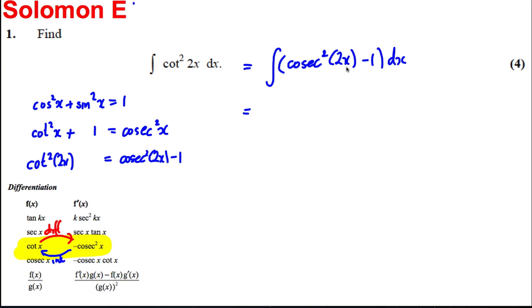the integral of cosec squared of 2x, well, I know it's going to be cot 2x. It's also going to be a negative and also we have to divide by this 2 here. So it's going to be negative a half cot of 2x